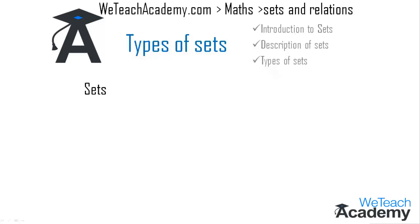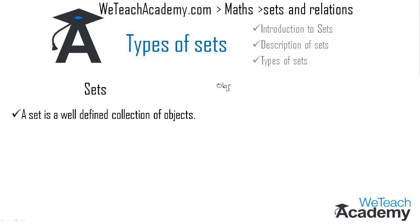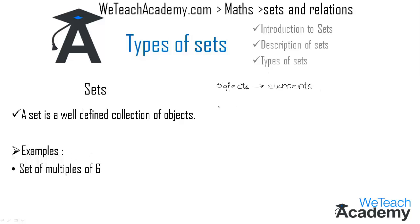Coming to the introduction of sets, a set is a well-defined collection of objects, where the objects are the elements of a set. For example, consider the set of multiples of 6. Let us name this set A. The multiples of 6 are 0, 6, 12, 18, 24, and so on. These numbers are the elements of the set, written in a row, separated by commas, and enclosed in braces. We can also write this as: x such that x is a multiple of 6.